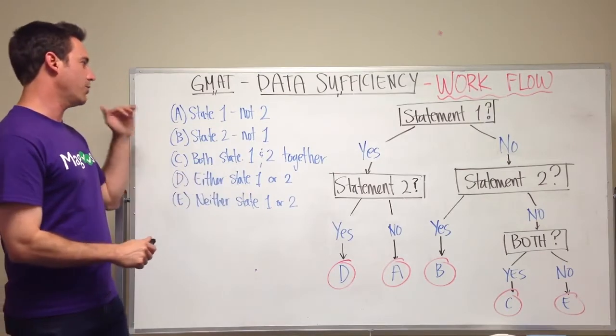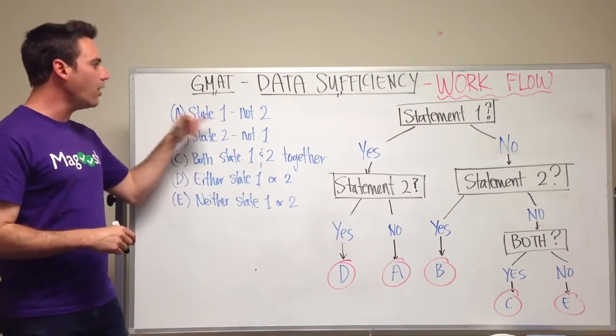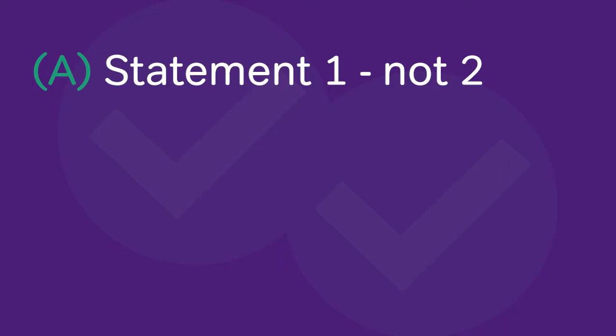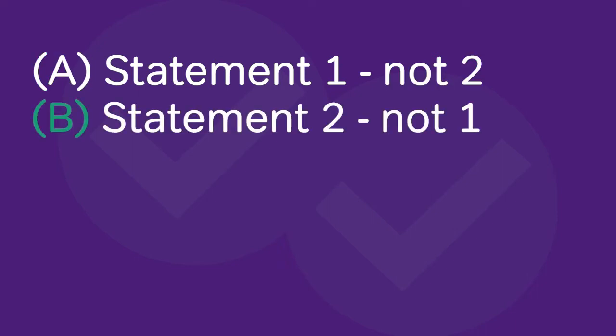So it's important to remember that answer choice A is that statement 1 is sufficient and not statement 2. So just statement 1 is sufficient. Answer choice B is that statement 2 is sufficient and not statement 1.